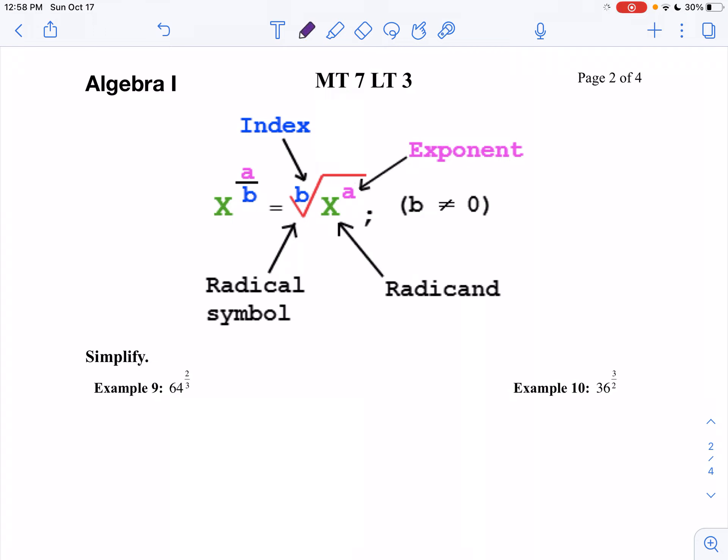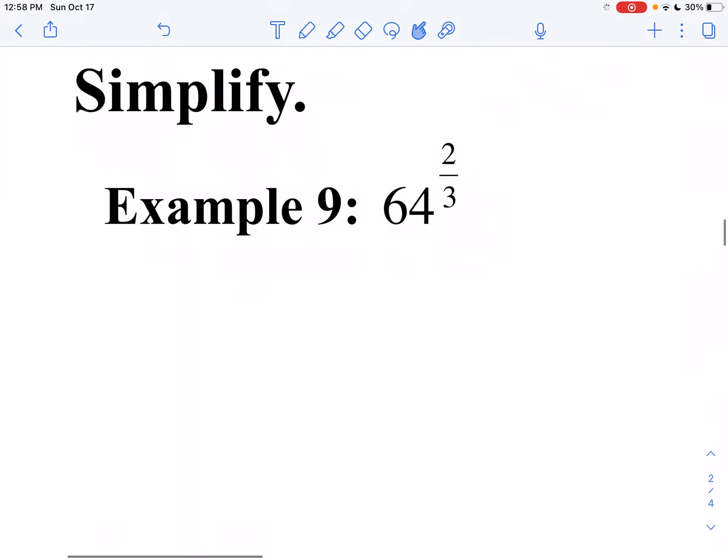If I have 64 to the two-thirds power, let me blow this up because I'm going to do it two different ways and you can determine which one you like. I could do the cube root of 64 and then I'm going to square that.